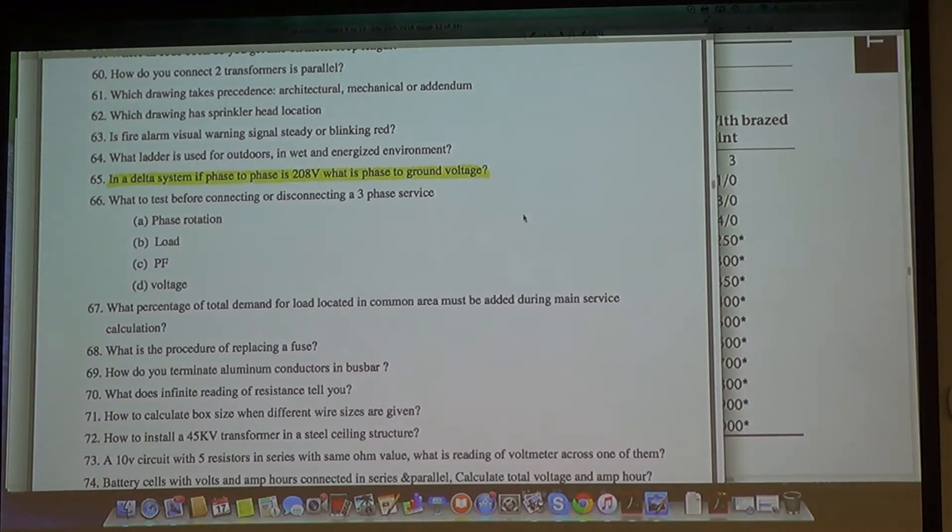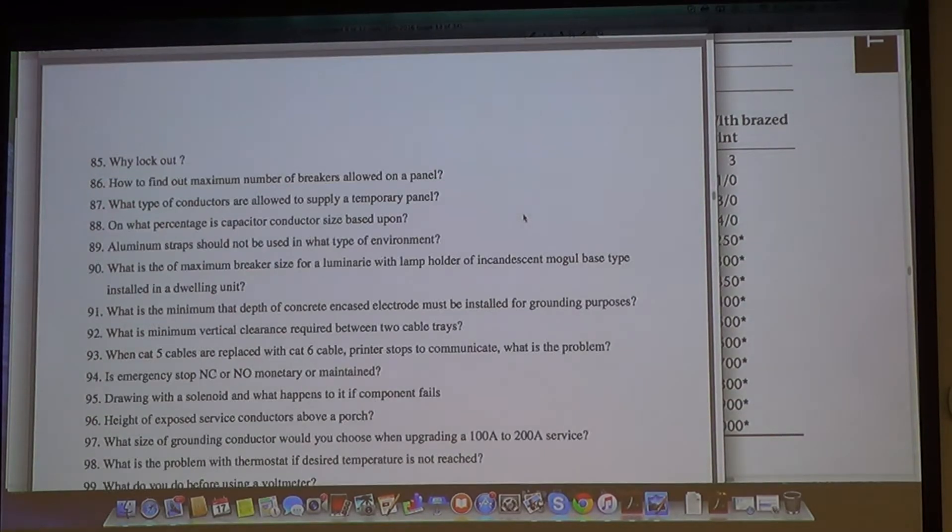In a delta system, if phase to phase is 208, I'm going to ask this from memory. What is phase to ground? 120. Easy, breezy. Move, done.